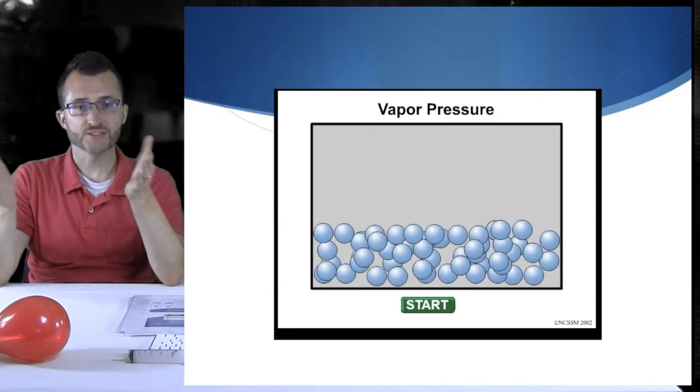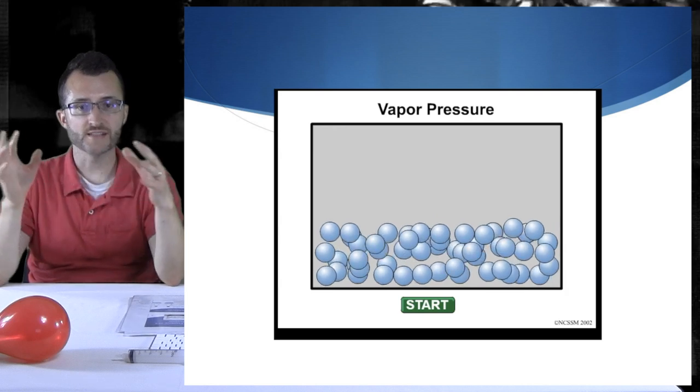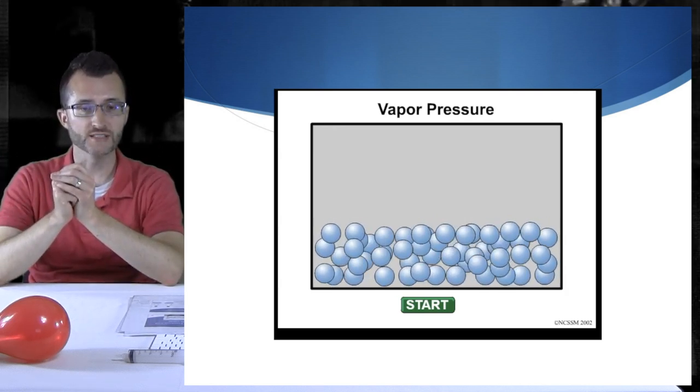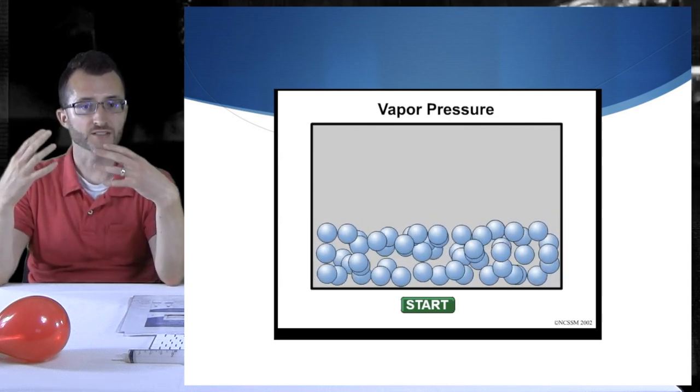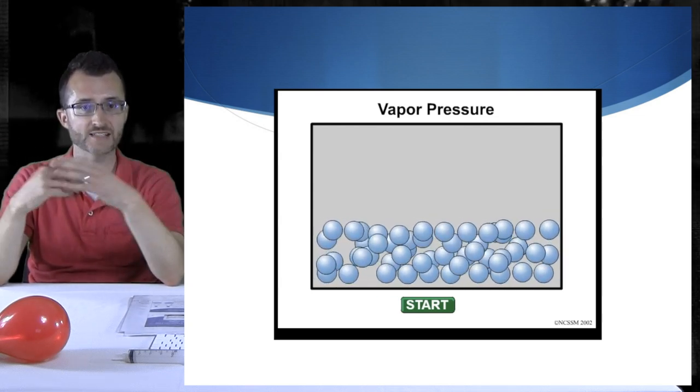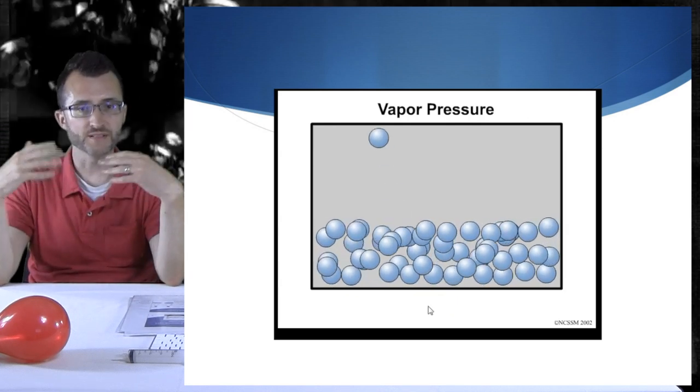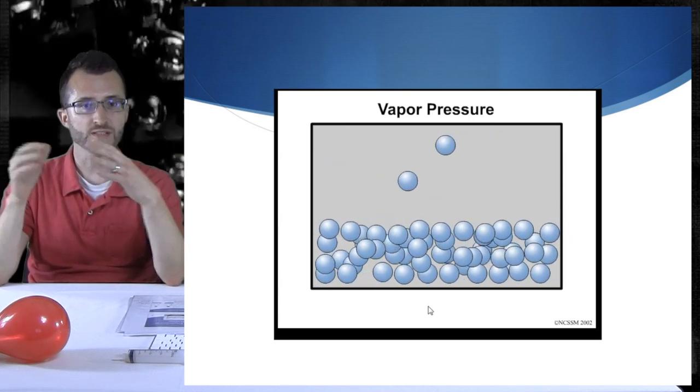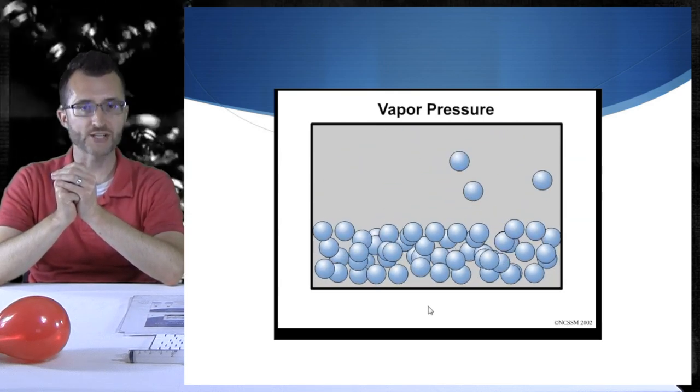Just to further illustrate vapor pressure, we've got a sample in the liquid phase. You can see those particles are moving around. Remember they have vibrational translational motion. Now there's going to be some energy available for the particles to go from the liquid phase to the gas phase. And again, that's going to occur at the surface. We call that evaporation. Now as I start to build up a little bit of vapor above that liquid, the collision between the particles and with the container walls create what is called vapor pressure.